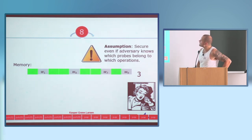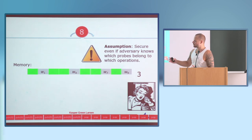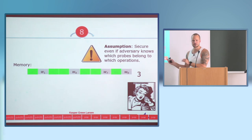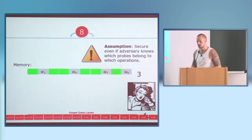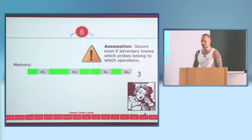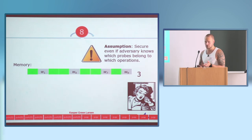One assumption we make is that your ORAM has to be secure even if the adversary knows which probes belong to which operation — they know the split point between operations. We're only measuring the amount of bits that need to be transferred. It doesn't matter whatever it does to shuffle things — it's just the amount of bits. There's a compression argument in the actual paper that makes it work, so it's not actual balls but just the number of bits that need to be transferred. That's why it holds without the balls-and-bins assumption.